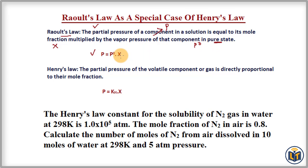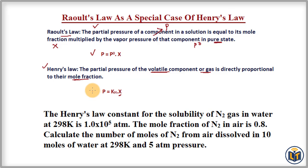Now coming to Henry's law: it states that the partial pressure of a volatile component — volatile means the component which can evaporate very easily into gas — is directly proportional to the mole fraction of the solute. Comparing both formulas, the partial pressure of the component in a solution is directly proportional to mole fraction in both laws. The only difference is that the proportionality constant is different: in Raoult's law we have P₀, and in Henry's law we have K as the proportionality constant.